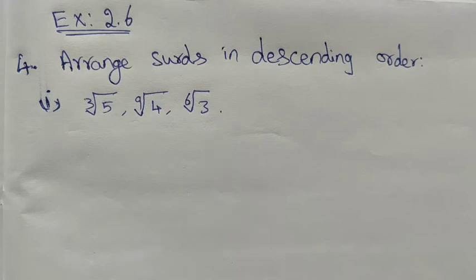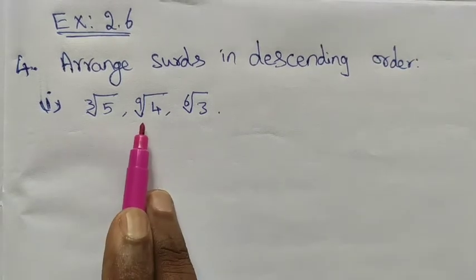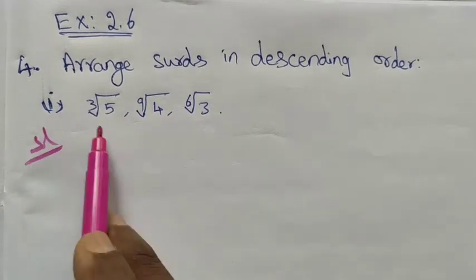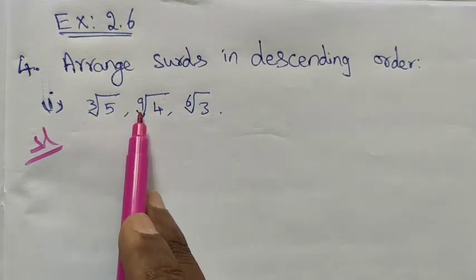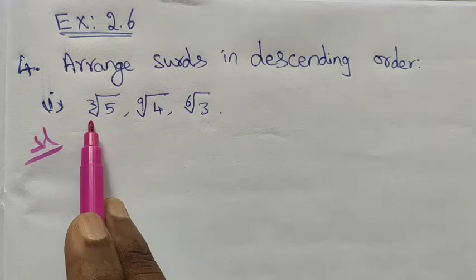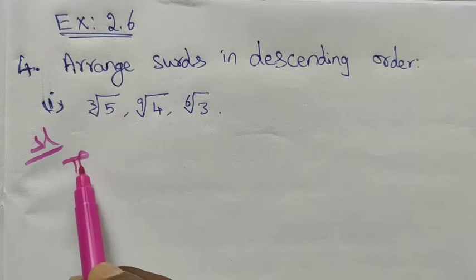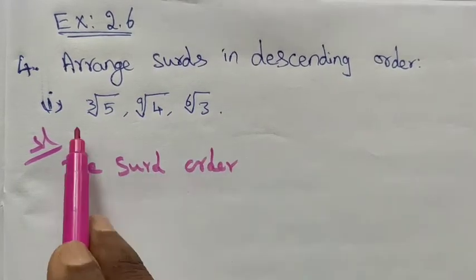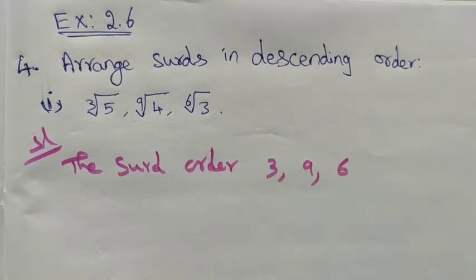Hi students, class 9 exercise number 2.6 question number 4: arrange the surds in descending order. The first roman number gives us cube root of 5, ninth root of 4, and sixth root of 3. First of all, the index of the roots are not equal — we have cube root, ninth root, and sixth root — so we want to find the LCM for these root values: 3, 9, and 6.